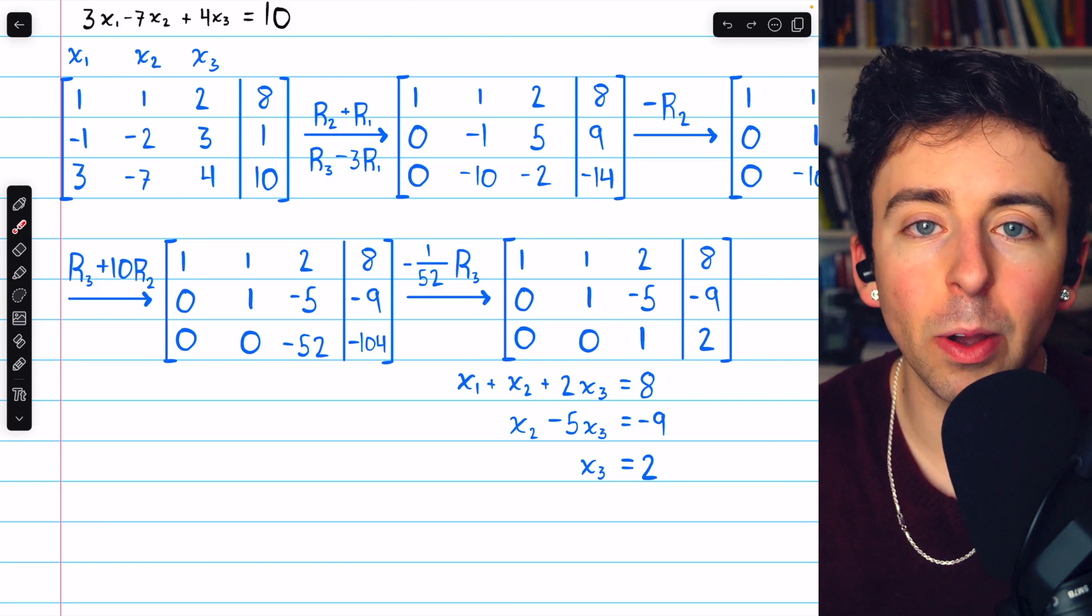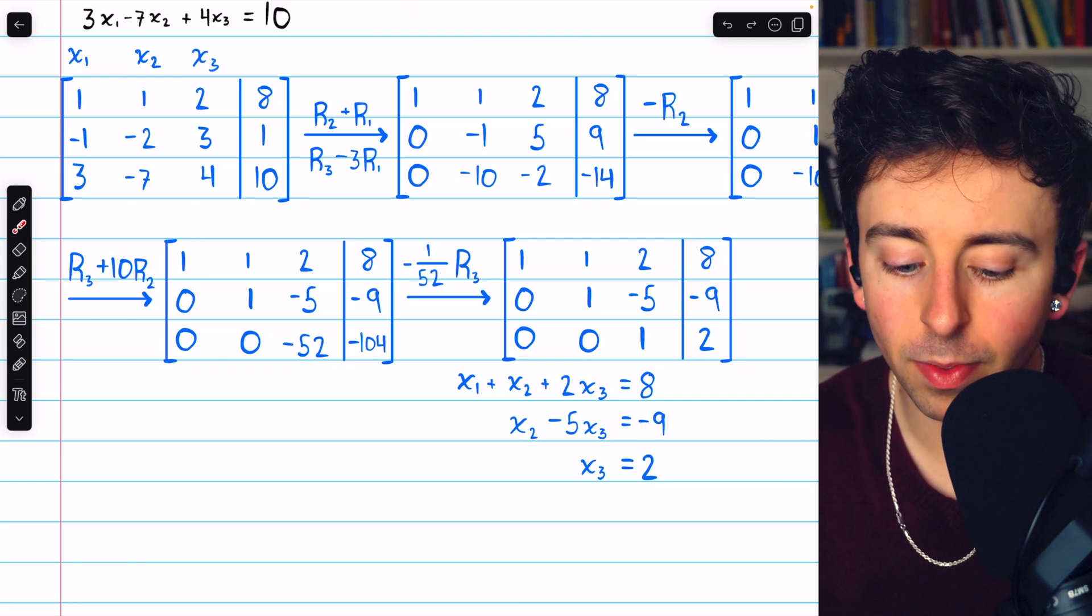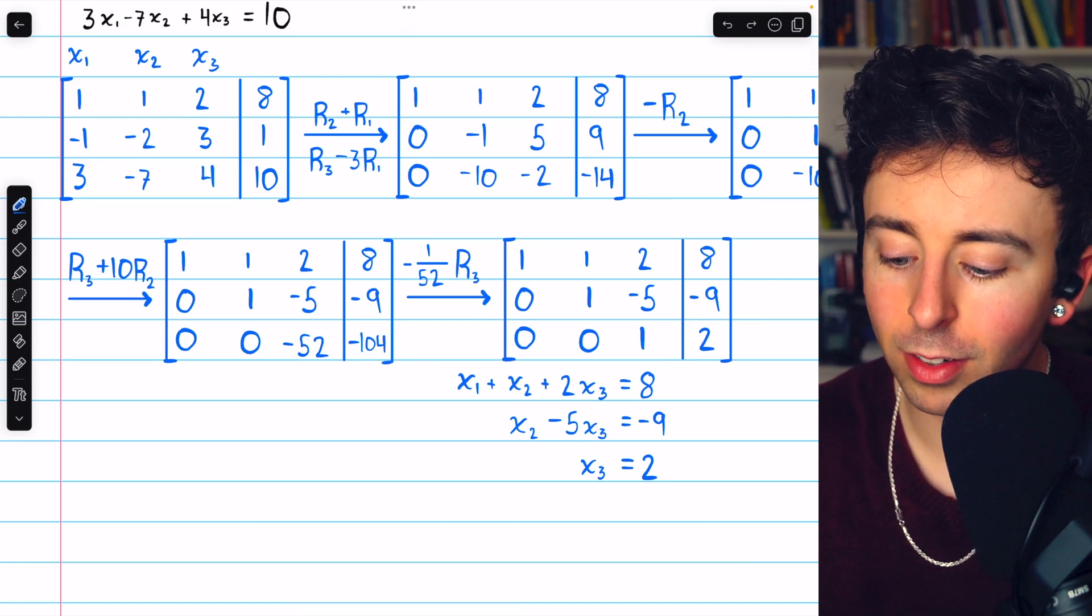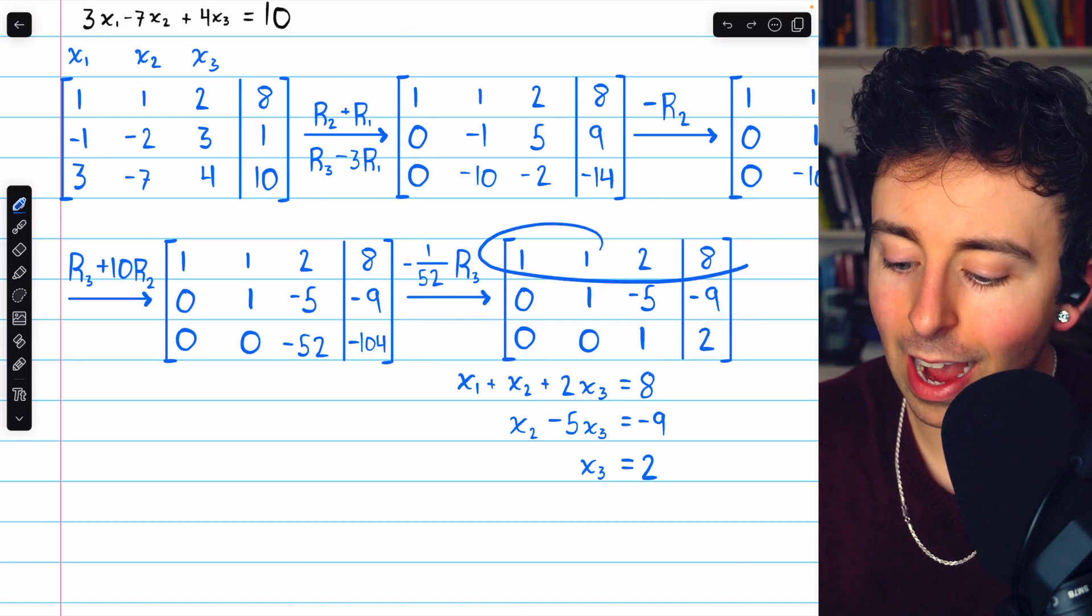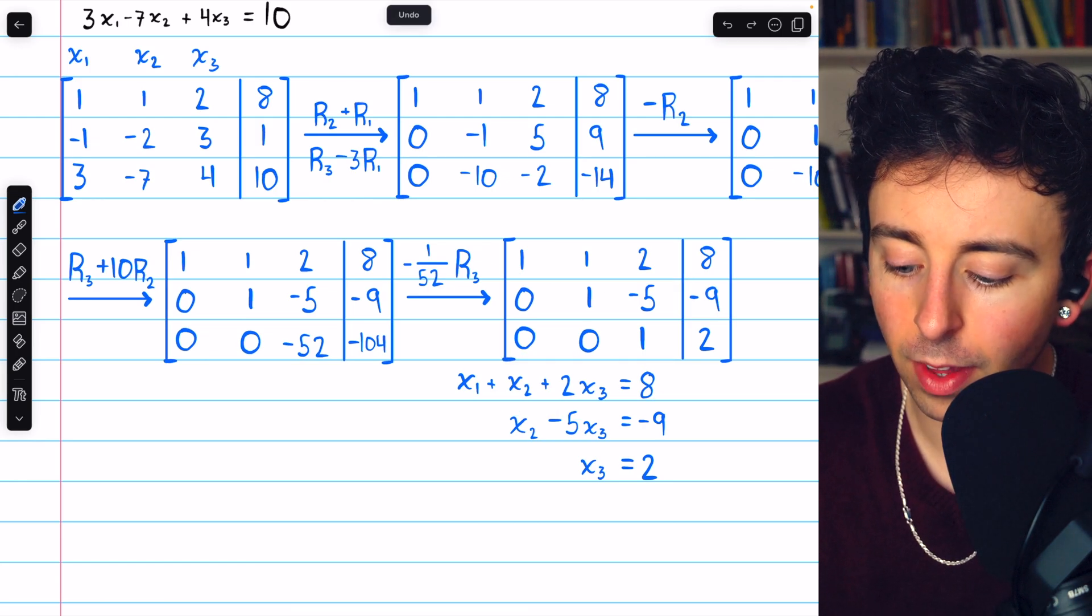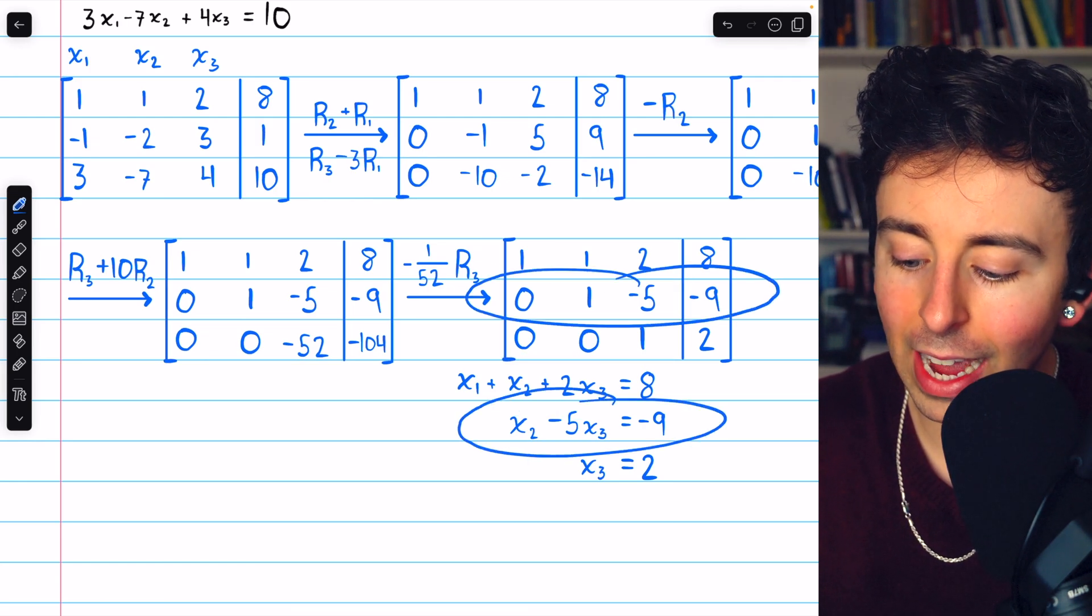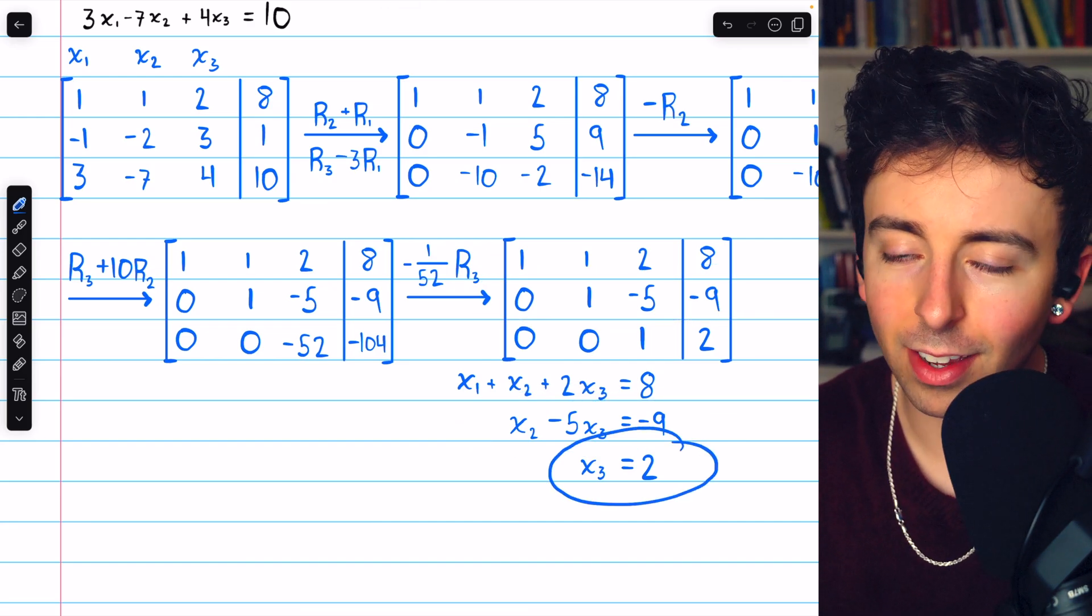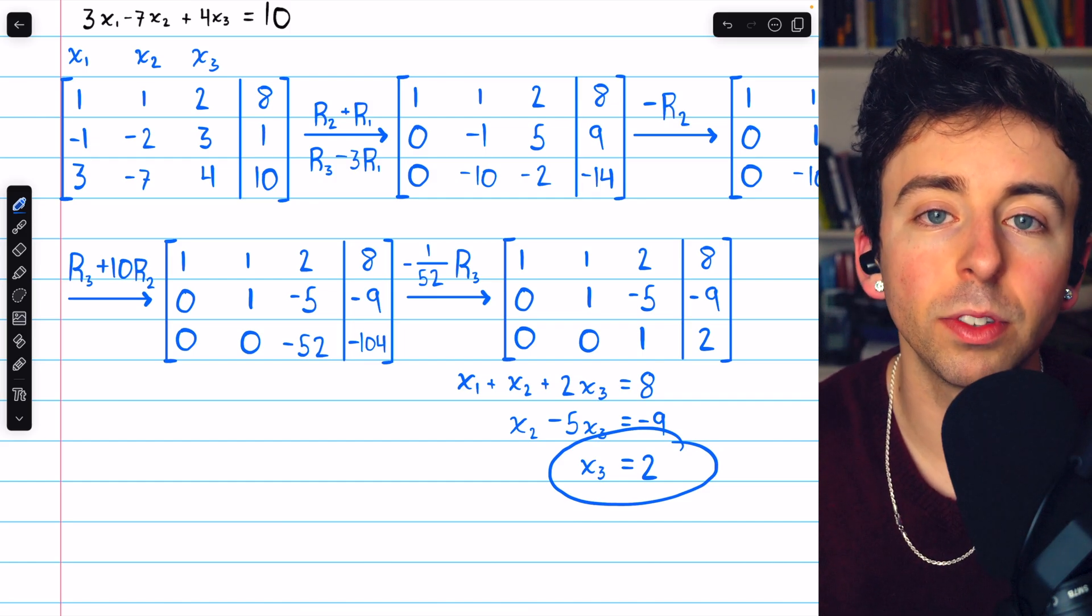We've now completed Gaussian elimination and we can finish solving the system. Let's quickly write the equations represented by this augmented matrix. Row one tells us that x1 plus x2 plus 2x3 equals eight. Row two tells us that x2 minus 5x3 equals negative nine. And row three tells us simply that x3 equals two.